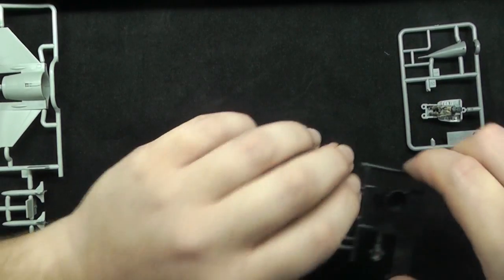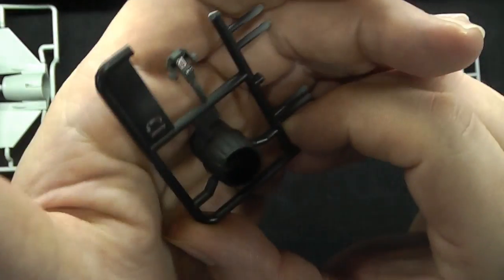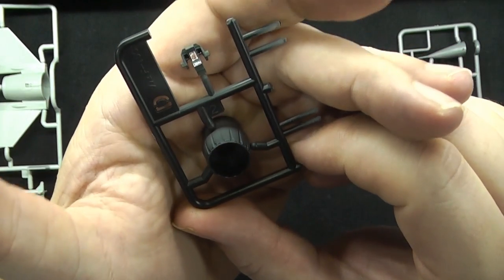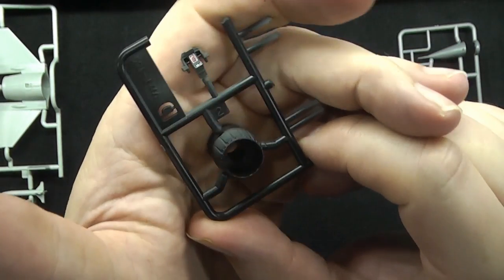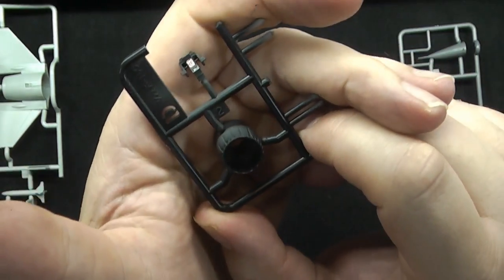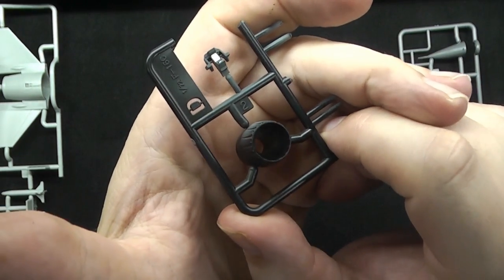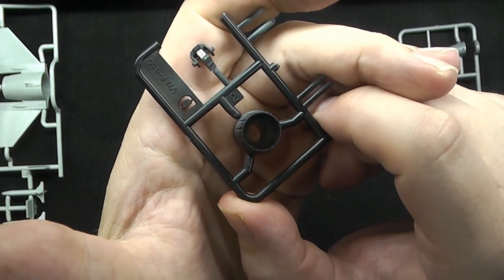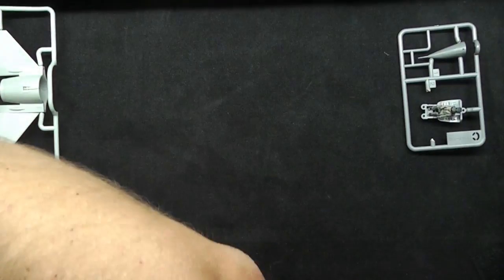And then with the instrument panel, I've added a couple of spare decals I had lying around. This is from a 1/48 Raptor, I think. And just added a little bit of green to the screens to make it look like the HUDs are working.